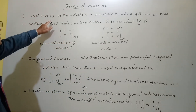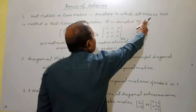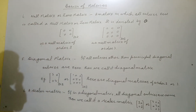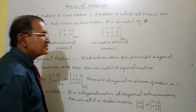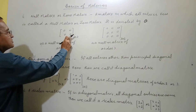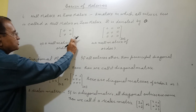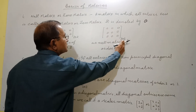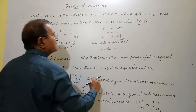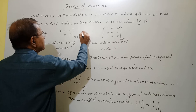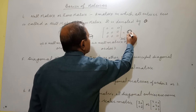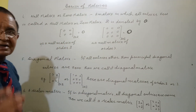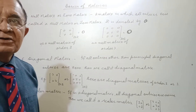Next is a null matrix or zero matrix. A matrix in which all entries are zero is called a null matrix. It is denoted by a thick zero. For example, a 2 by 2 matrix with all zeros, or a 3 into 3 matrix with all zeros — both are null matrices. It is denoted by thick zero, but it doesn't mean it equals zero.